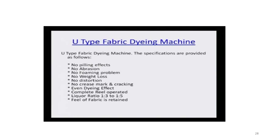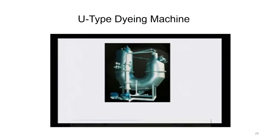The U-type fabric dyeing machine specifications confirm: no pilling effect, no abrasion, no foaming problem, no weight loss, no distortion, no crease mark or cracking, even dyeing effect, complete reel-operated with liquor ratio of 1:3 or 1:5, and the feel of the fabric is retained and sometimes even improved. It is used extensively in the industry for these major advantages.